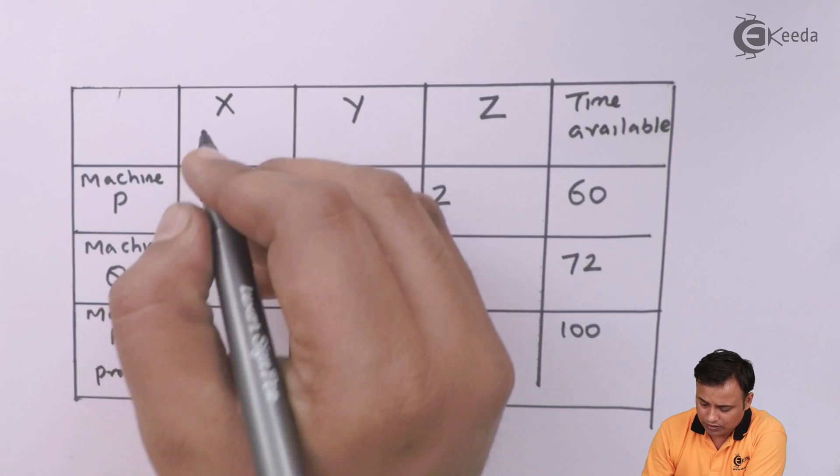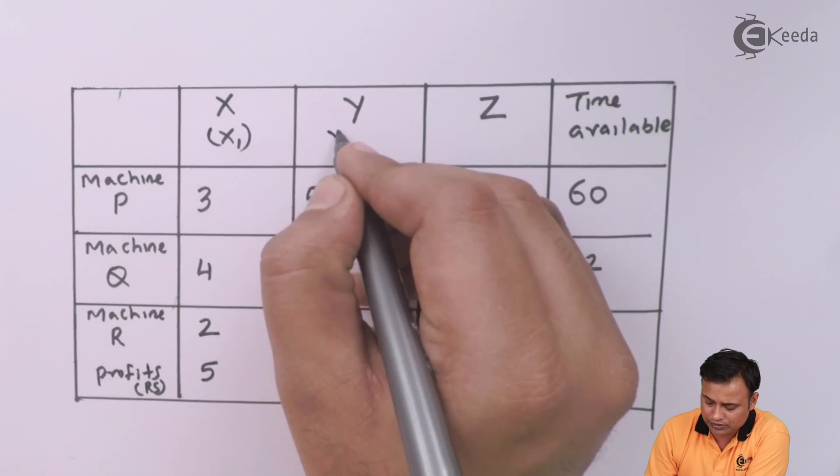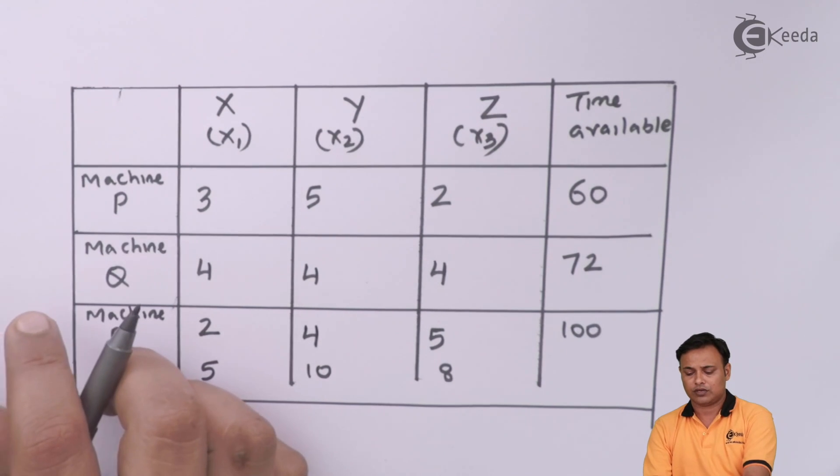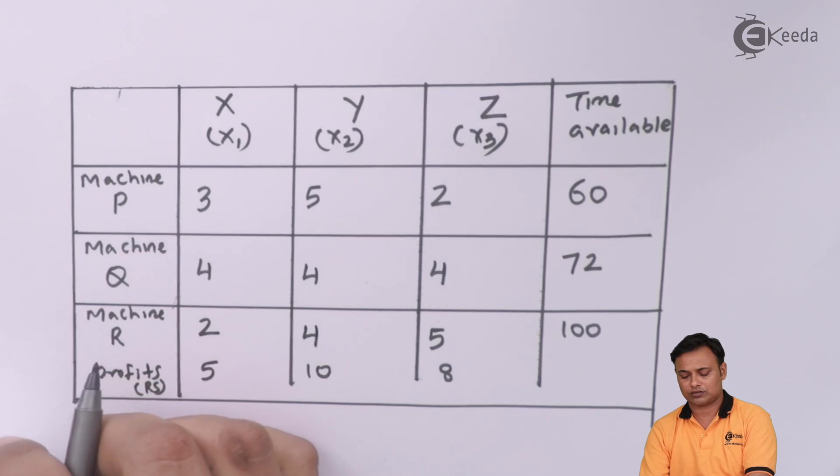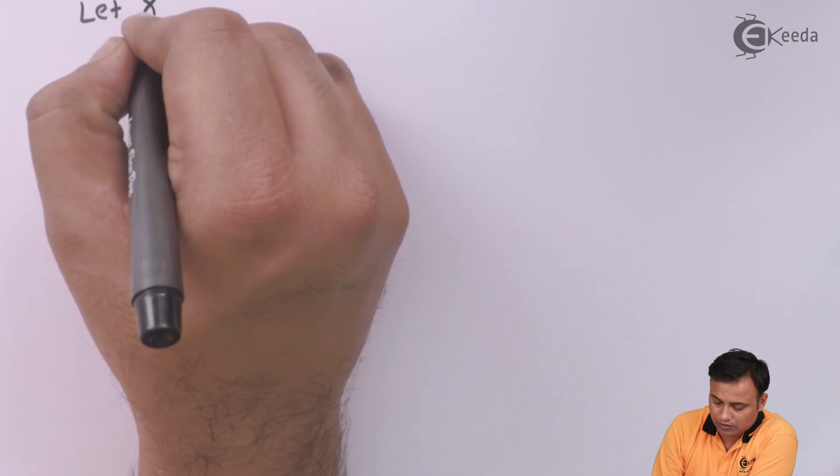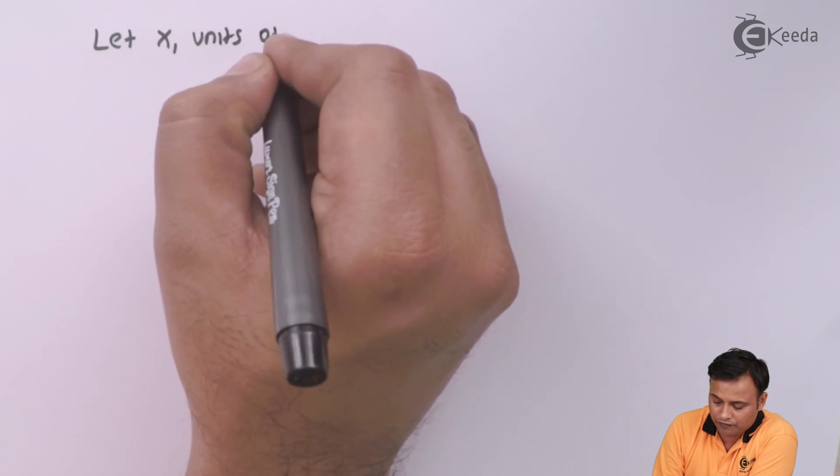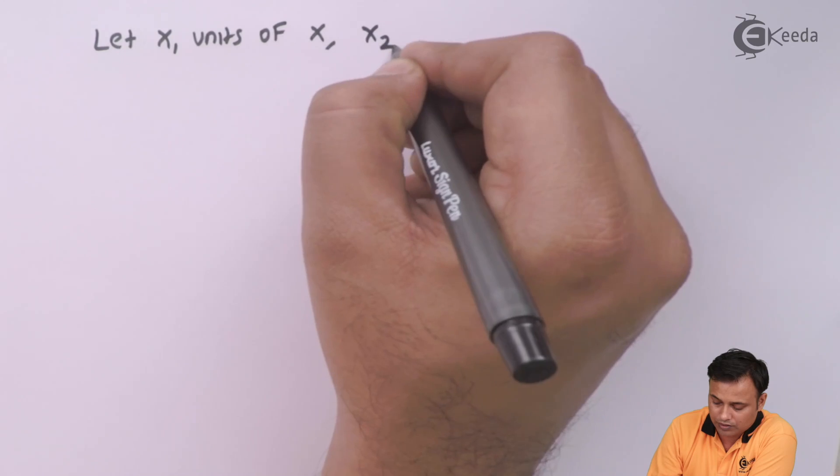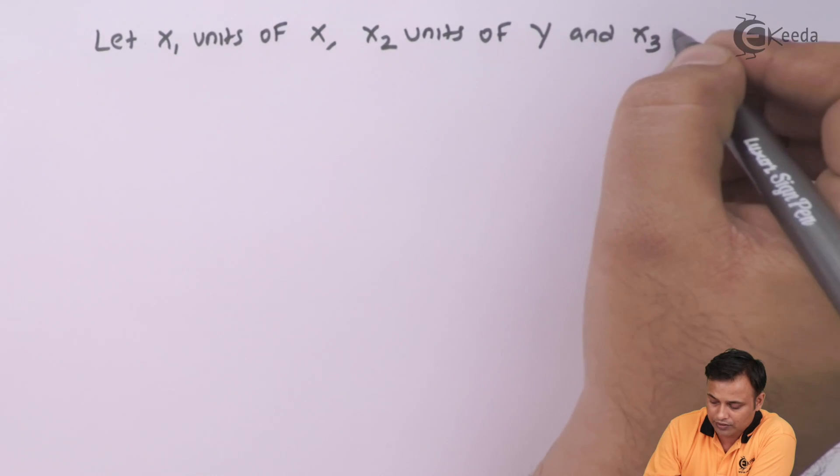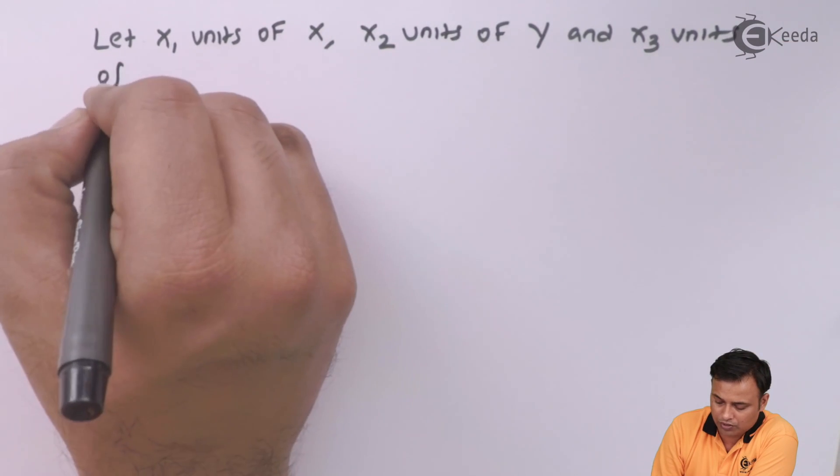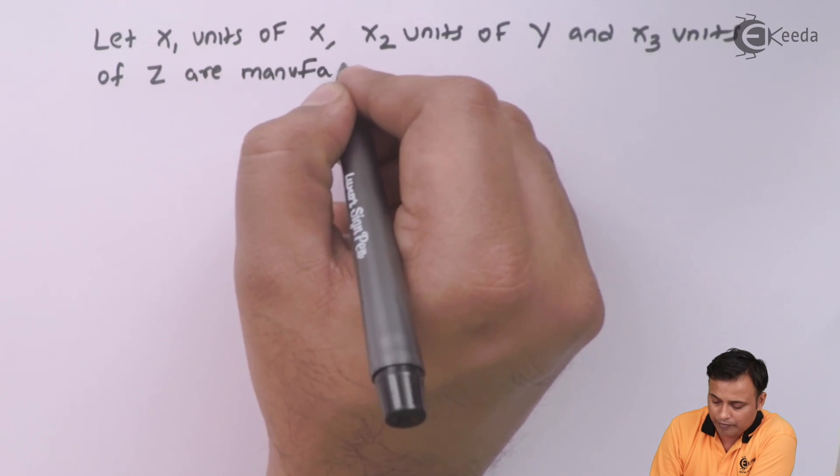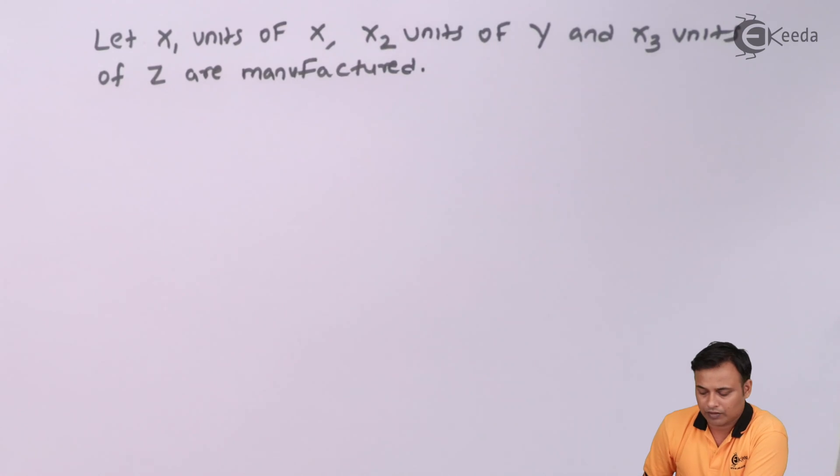We will make the assumptions first. We will assume X1 units of product X, X2 units of product Y and X3 units of product Z are manufactured. So let's first write down the assumptions. Let X1 units of X, X2 units of product Y and X3 units of product Z are manufactured. My basic assumption.